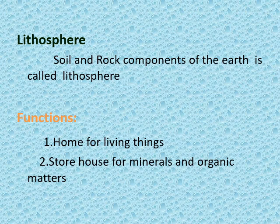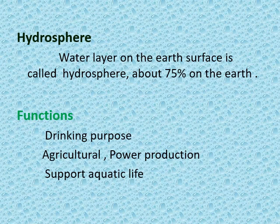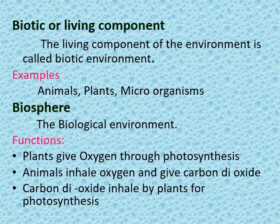Hydrosphere: The water layer on the earth's surface is called hydrosphere, which covers about 75% of the earth. The functions of hydrosphere are: it is useful for drinking purpose, agricultural and power production, and it supports aquatic life.